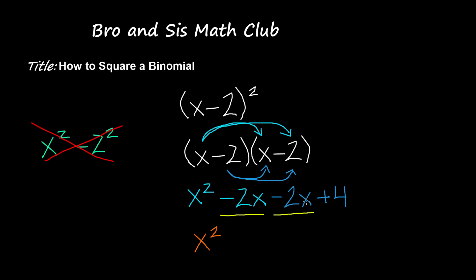The reason they're like terms is because they have the same variable. So when we combine this, we get negative 4x. And now I'm going to bring down positive 4 as it is because it's the only constant and there is no other like term for it.